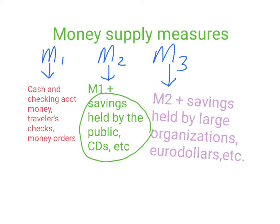M3 includes everything in M2, plus savings held by large organizations — large financial organizations like pension companies, or large banks in general, or insurance companies. It also includes eurodollars. Eurodollars are dollars that people have in a foreign bank, but it's still denominated in dollars, so they did not transfer it or convert it into a foreign currency. They're still holding it in dollars, but it's in a foreign bank.